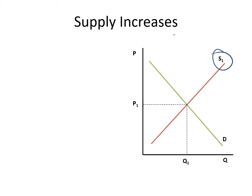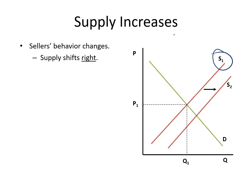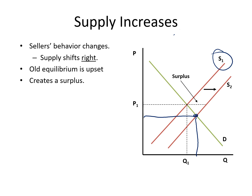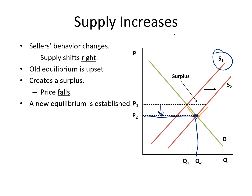When the supply curve increases, we get a new equilibrium point. What happened to the price? The prices fell. And what happened to the quantity? It increased.